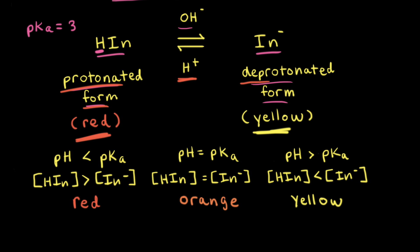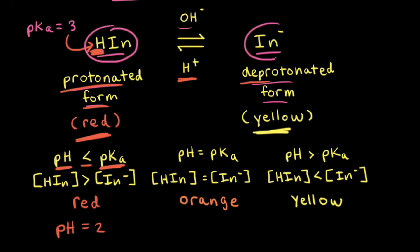Let's think about the color of a solution containing this acid-base indicator at different pH values. The pKa value for the acidic proton on the protonated form is equal to 3 at 25°C. If the pH of the solution is equal to 2, the pH is less than the pKa value. Thinking of the protonated form as a weak acid and the deprotonated form as the conjugate base, when the pH is less than the pKa value, the concentration of the weak acid is greater than the concentration of the conjugate base.